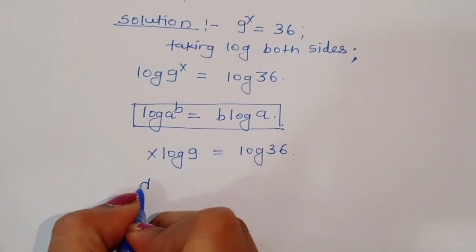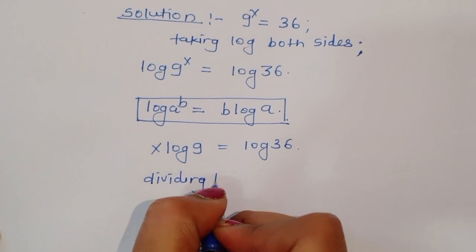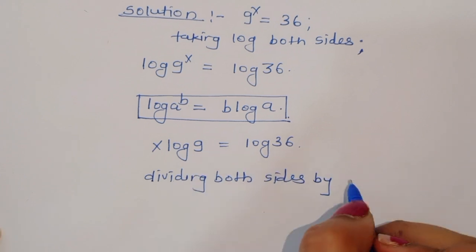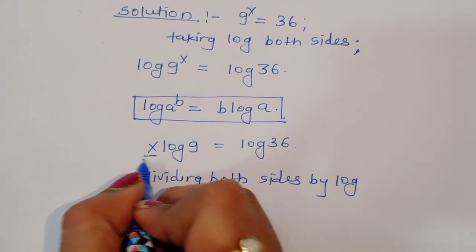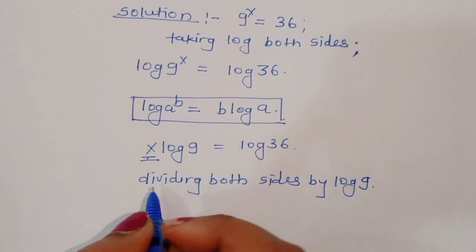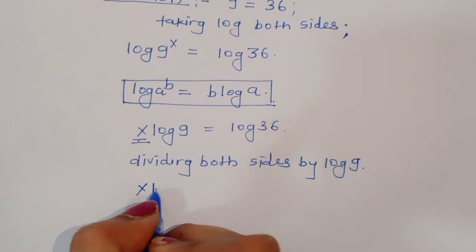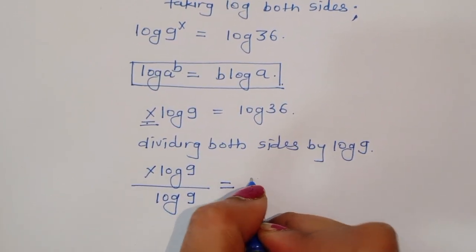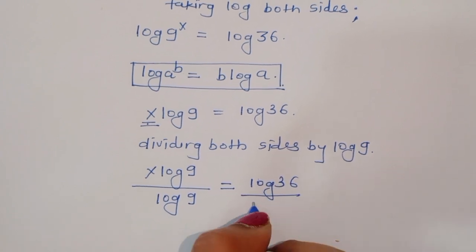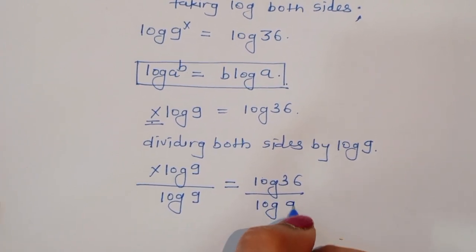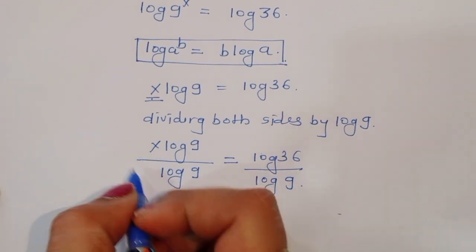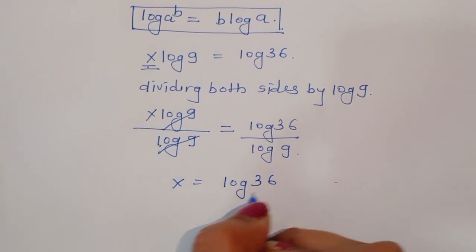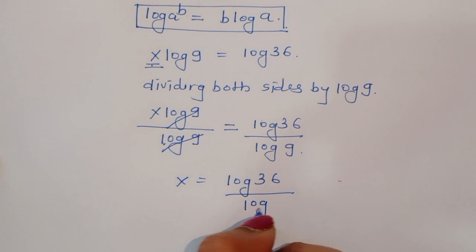Now, dividing both sides by log of 9, because we have to find out the value of x. We get x log of 9 divided by log of 9 is equal to log of 36 divided by log of 9. Log of 9 cancels, so x is equal to log of 36 divided by log of 9.